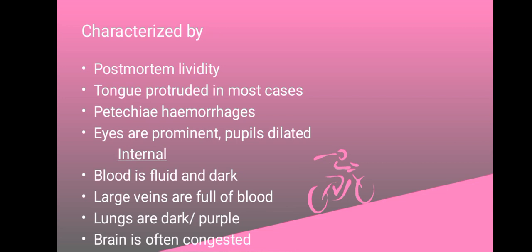Asphyxiation is also characterized by the tongue being protruded in most cases, and blood and mucus escaping from the mouth as well as the nostrils. Another characteristic is petechial hemorrhages, which are seen in the eyes due to the rupture of blood vessels.